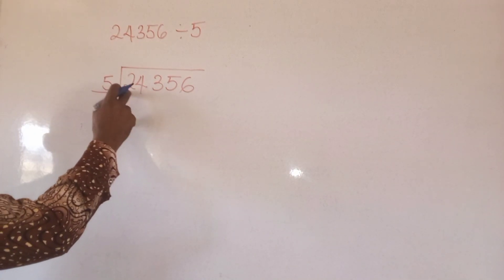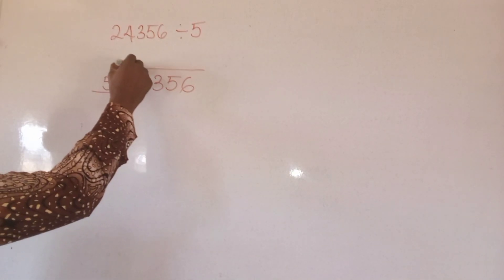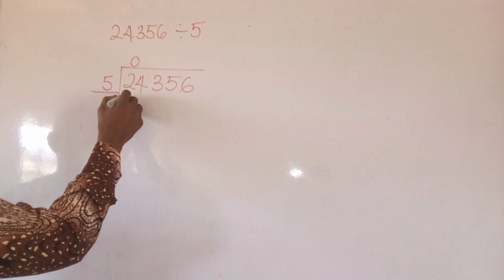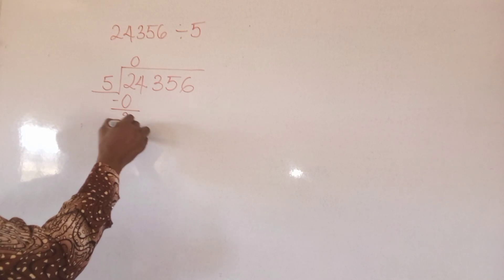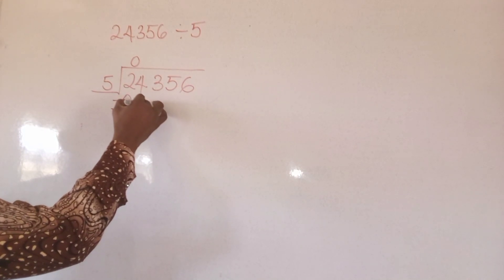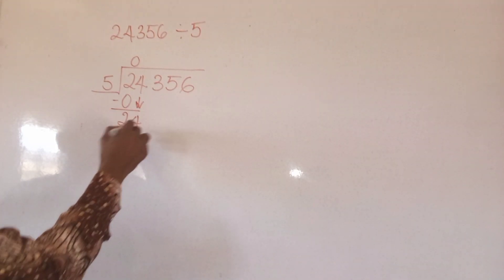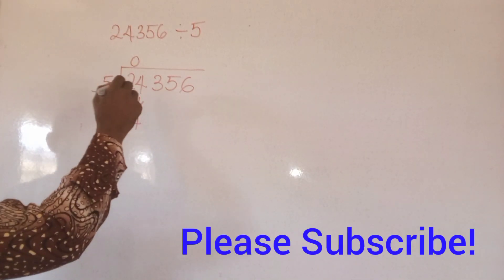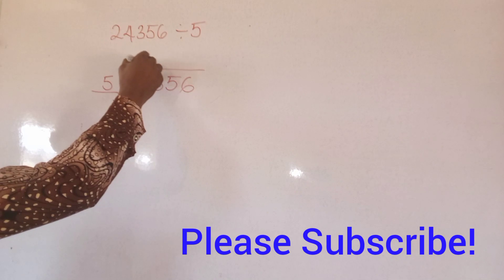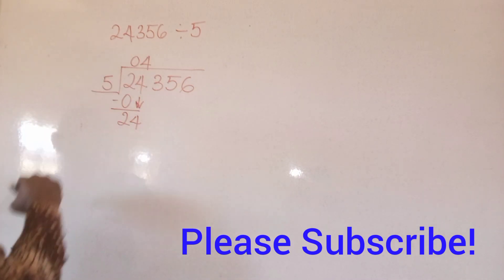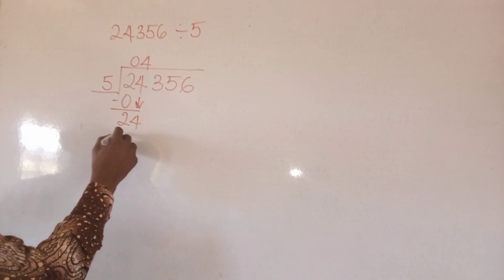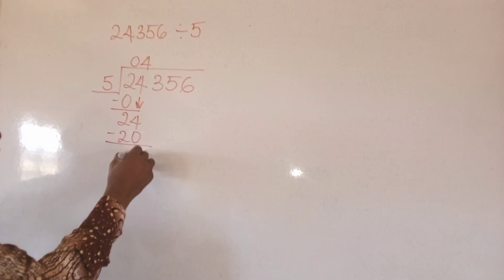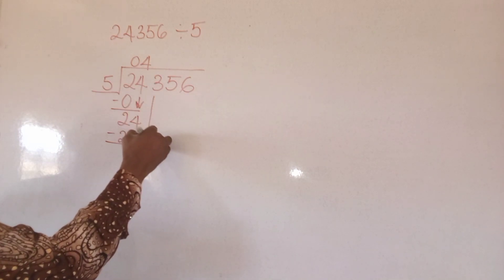Dividing 2 by 5 will give me zero. Zero times five will give me zero. Then subtract — we have two. Bring down four.